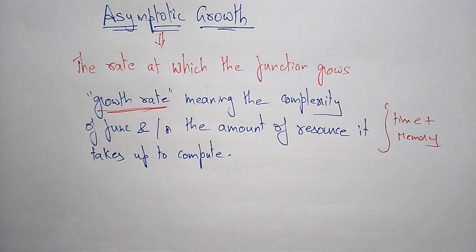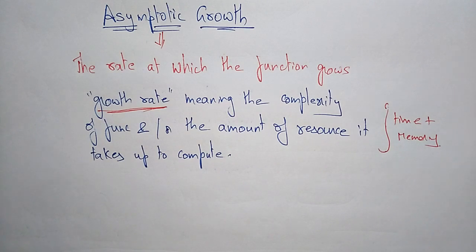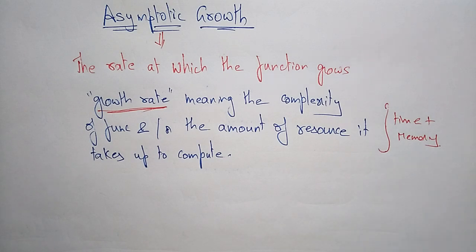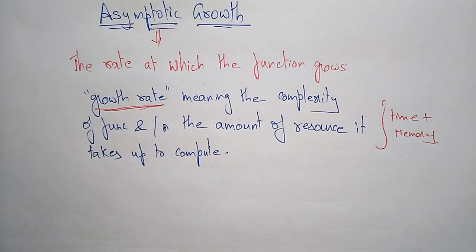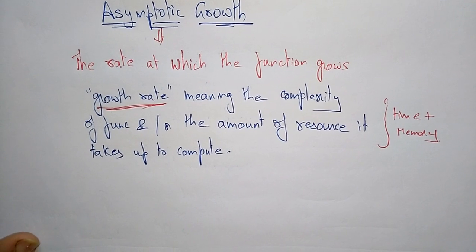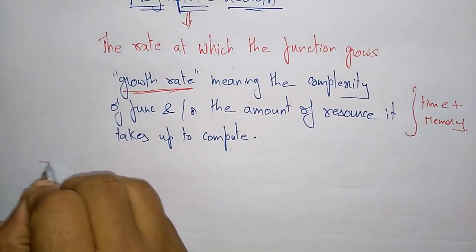It's completely about the time and the amount of resource — meaning the memory that it's using. That is called the growth rate. So asymptotic growth is the rate at which the function grows. Given any differentiable function f(n), all functions will fall into one of the asymptotic growth classifications. Let me write those classifications.